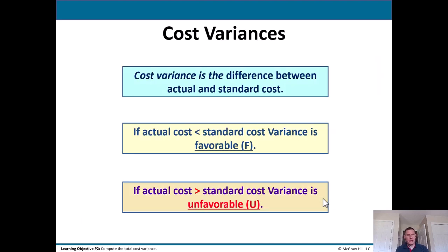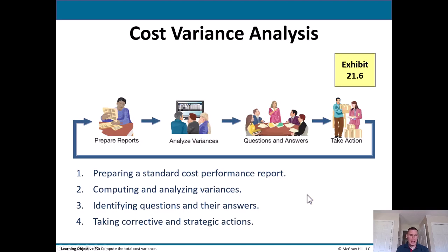Let's talk about cost variances. Variance means it isn't where you thought it would be. Cost variance is the difference between actual and standard cost. If actual cost is less than standard cost, the variance is favorable. If actual cost is more than standard cost, the variance is unfavorable. For cost variance analysis: first, prepare a standard cost performance report. Second, compute and analyze the variances — don't assume that just because it's favorable it wouldn't be investigated; favorable variances are often investigated too. Third, identify questions: what caused the variance and what can we do about it? Fourth, take corrective and strategic actions to close those variance gaps.